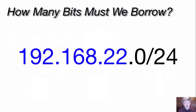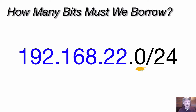Our next step: how many of the host bits are we going to have to borrow for our subnets? With a class C address, we've got these eight bits for hosts. We need to figure out how many of those we're going to take and turn them into network bits in order to satisfy our requirement for three subnets.